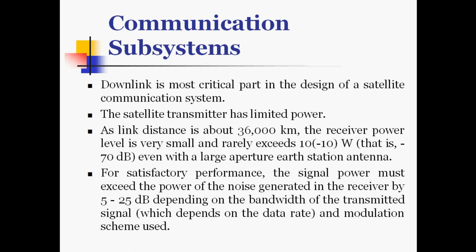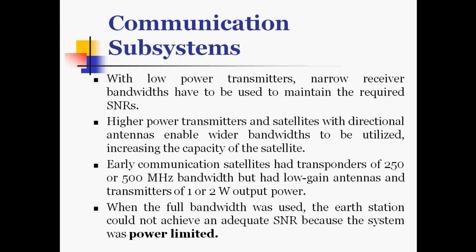For satisfactory performance, the signal power must exceed the noise power generated in the receiver by 5 to 25 dB, depending on the bandwidth of the transmitted signal, which depends on the data rate and modulation schemes used. With low power transmitters, narrow receiver bandwidths have to be used to maintain the required signal-to-noise ratios. Higher power transmitters and satellites with directional antennas enable wider bandwidths to be utilized, increasing the capacity of the satellite.